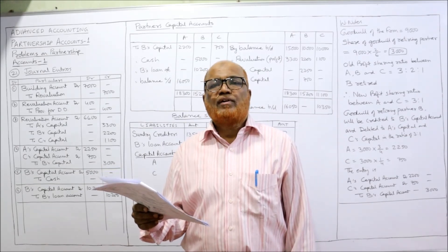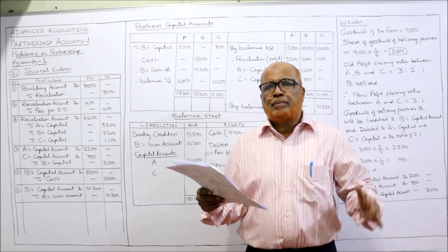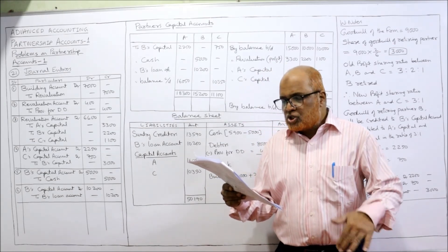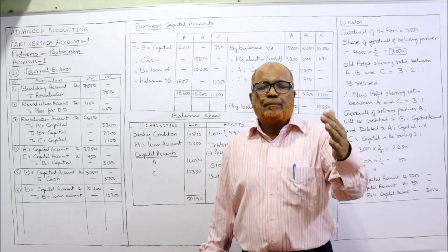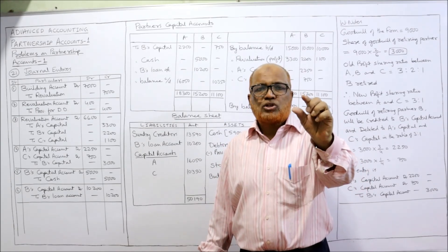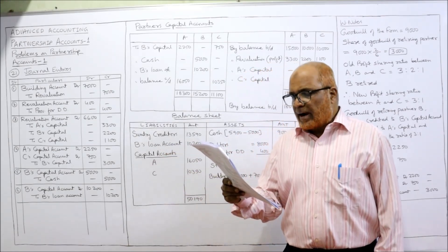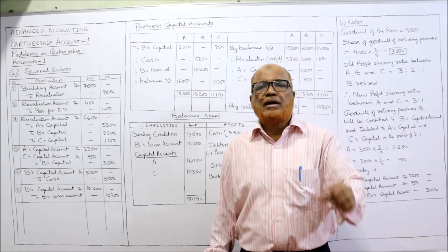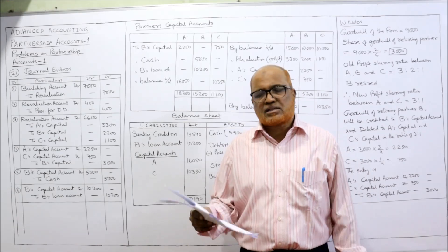B retired on the above-mentioned date on the following terms. One of the partners is retiring, that is B; the continuing partners are A and C. Building is appreciated by 7,000 — when an asset is appreciated, debit asset account (building account debit, revaluation account credit). Provision for bad debts to be made at 5% on debtors: entry will be revaluation account debit, provision for doubtful debts credit.